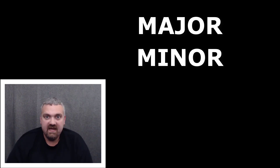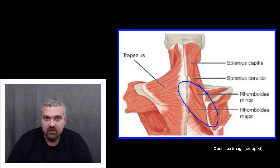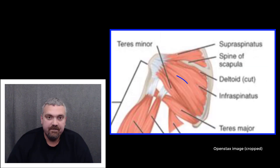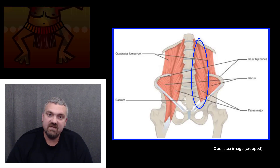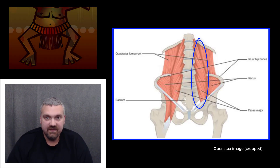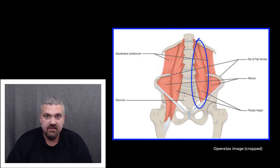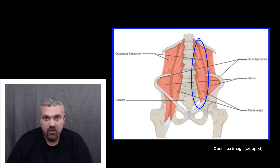Next, we have major and minor. If you have two muscles and one is larger than the other, they're going to be named major and minor. So you have the rhomboid major and rhomboid minor between your shoulder blades, the teres major and teres minor muscles of the scapula. My favorite is the psoas major and psoas minor — psoas actually means 'of the loins,' so this is your loin muscle that connects your spine to your hip. The psoas major is much larger than the psoas minor.